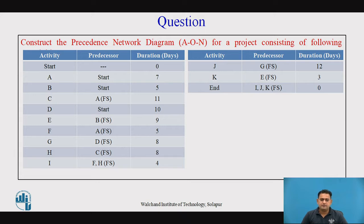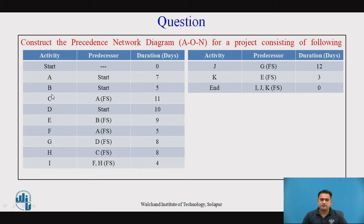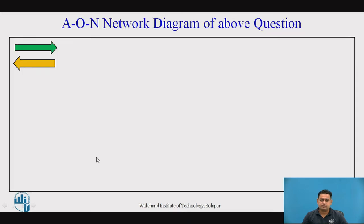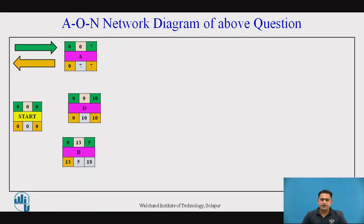This is the overall example for which we are going to construct the precedence network diagram. If you observe, there is a starting node with zero duration, and the succeeding activities A, B, and D are the starting activities. So let us start to construct the precedence network diagram. Here this is the starting activity with zero duration: A, D, and B.